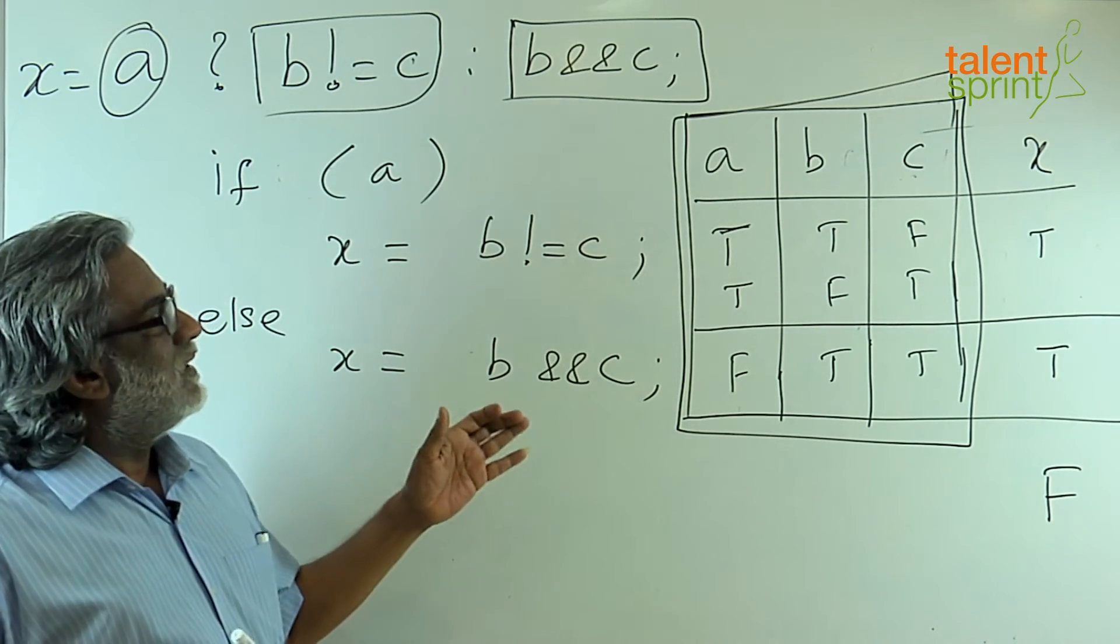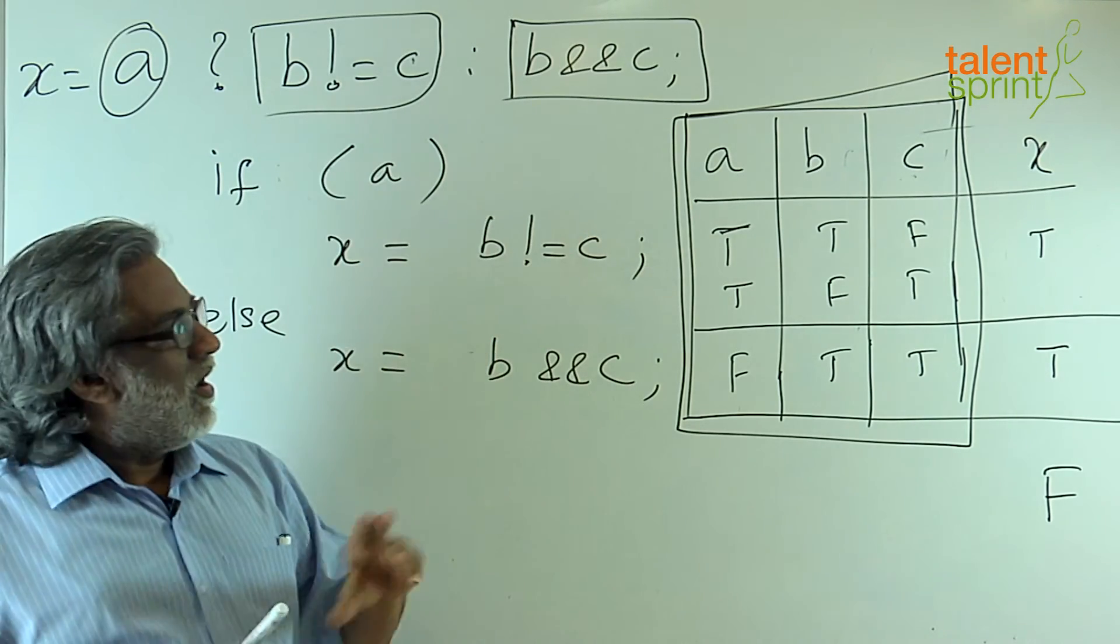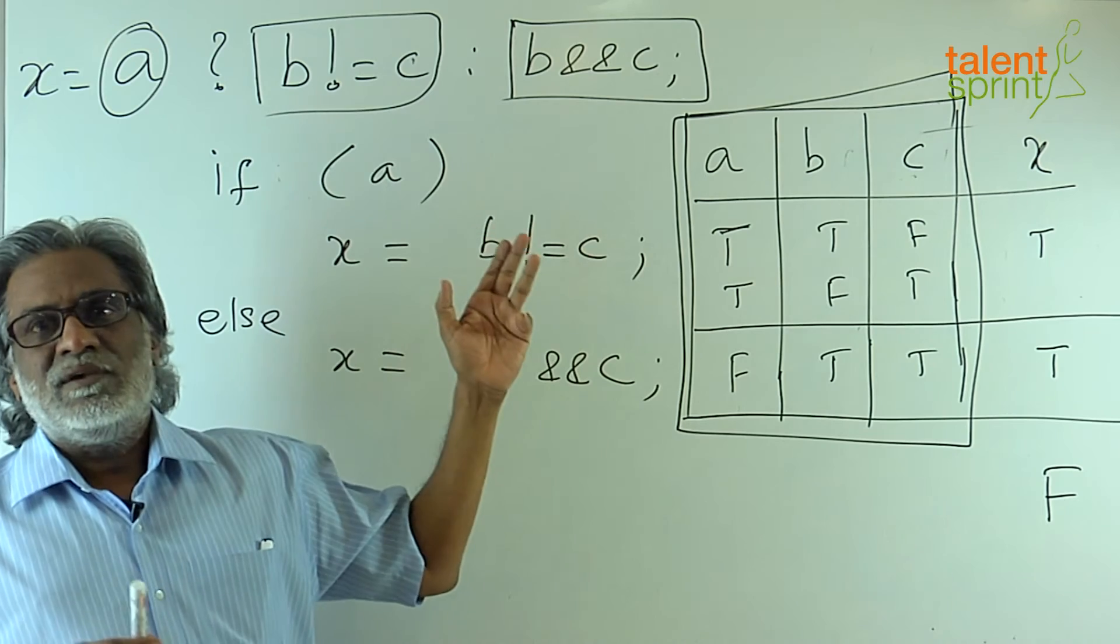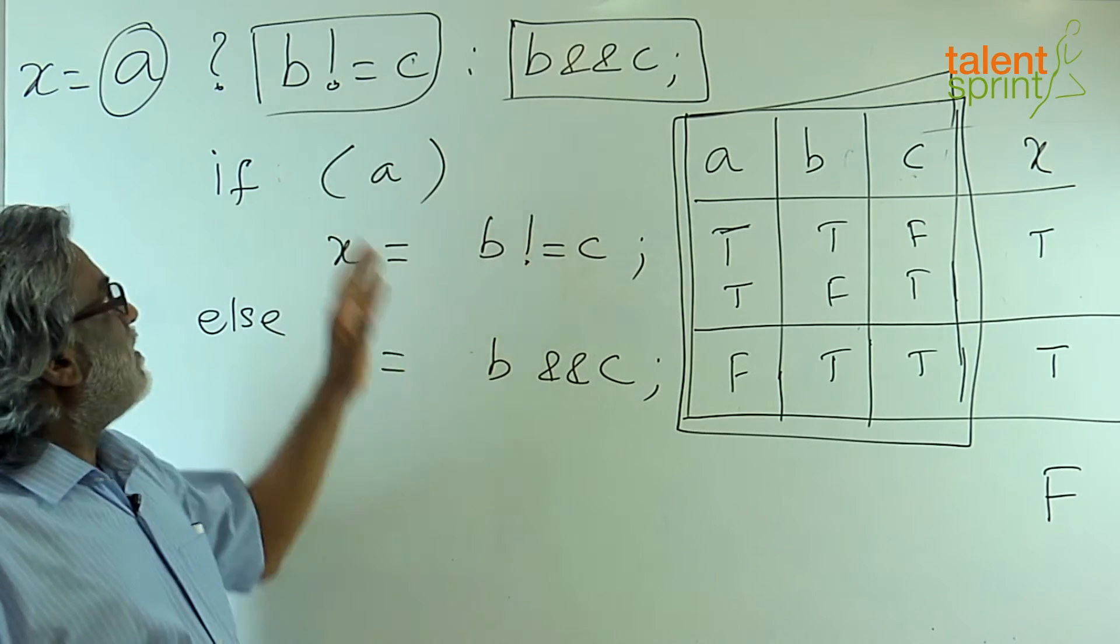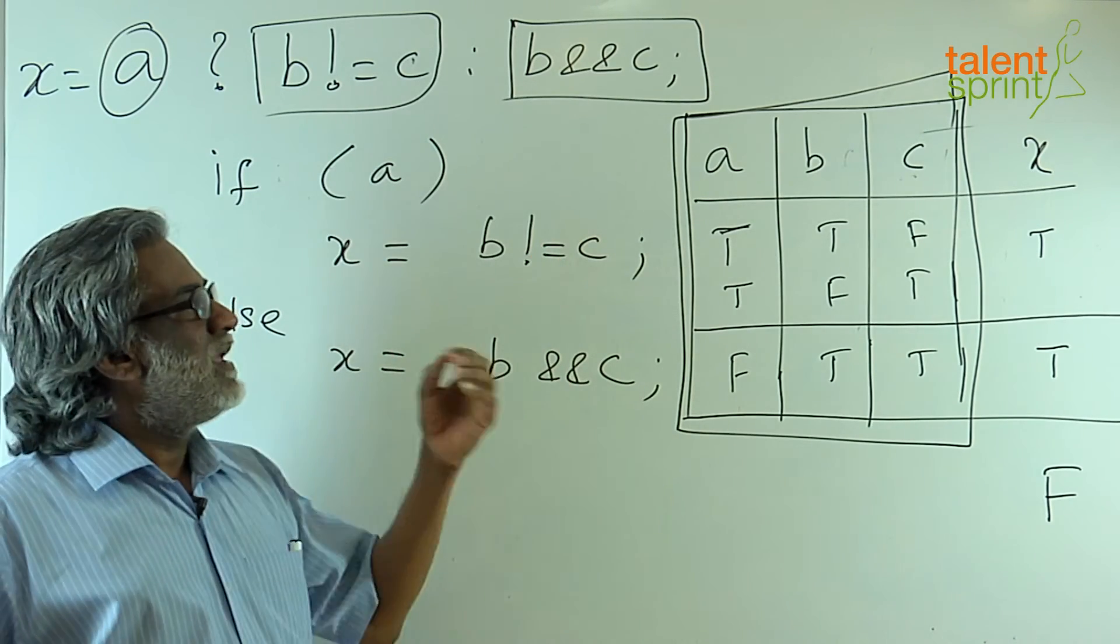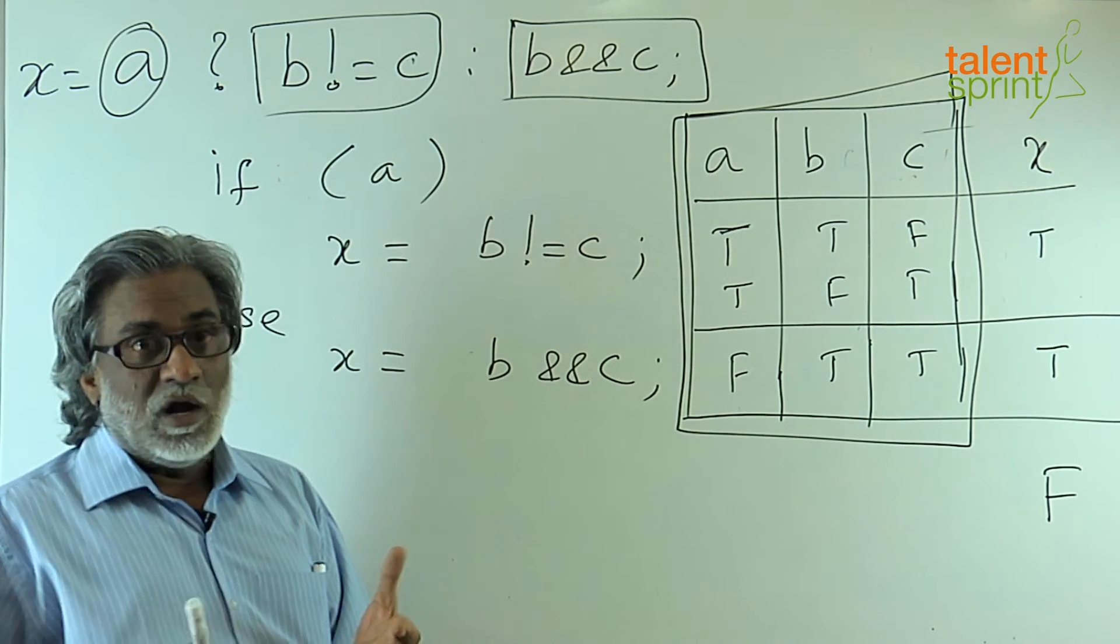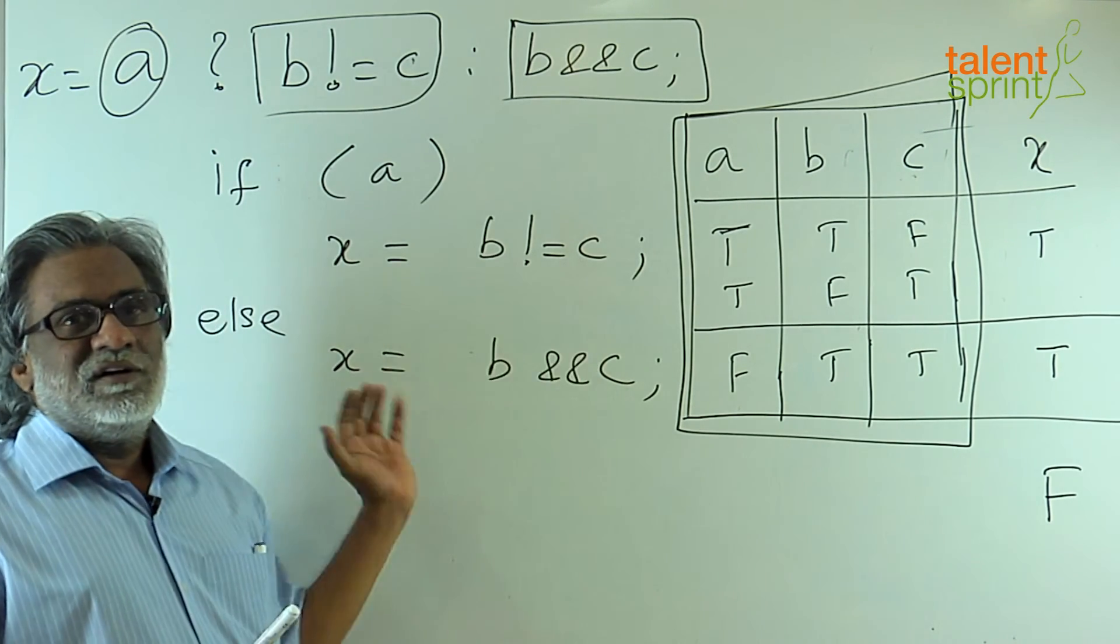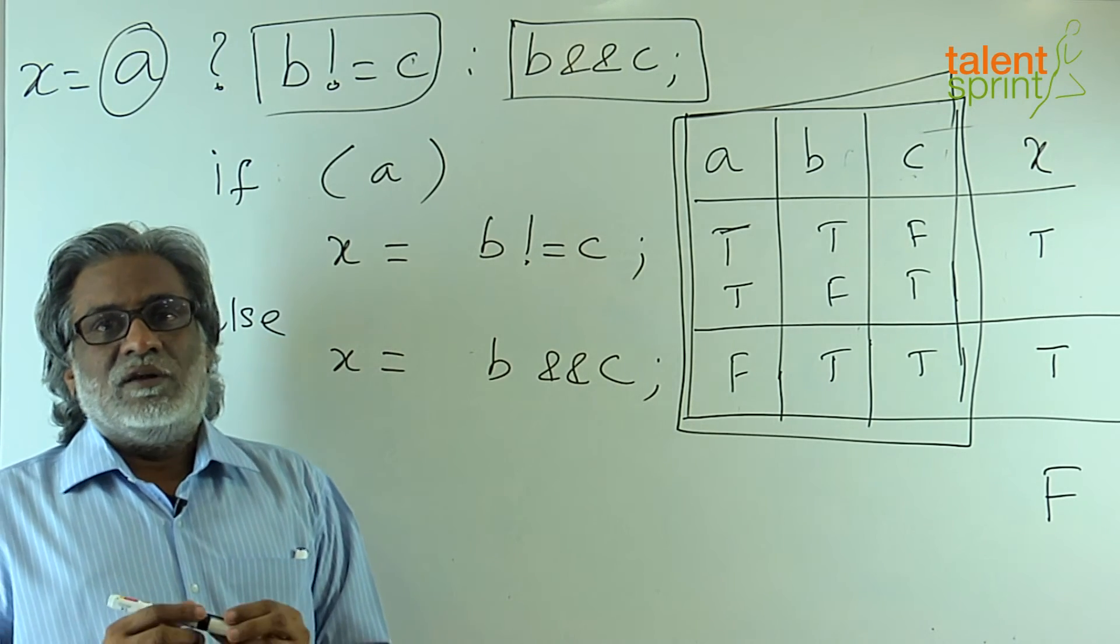So, this complicated expression is essentially saying are any two of A, B, C true? You can think of this complicated expression as counting how many of A, B, C is true, and if two are true, any two are true and only two are true, return the true value. In all other cases, return a false value.